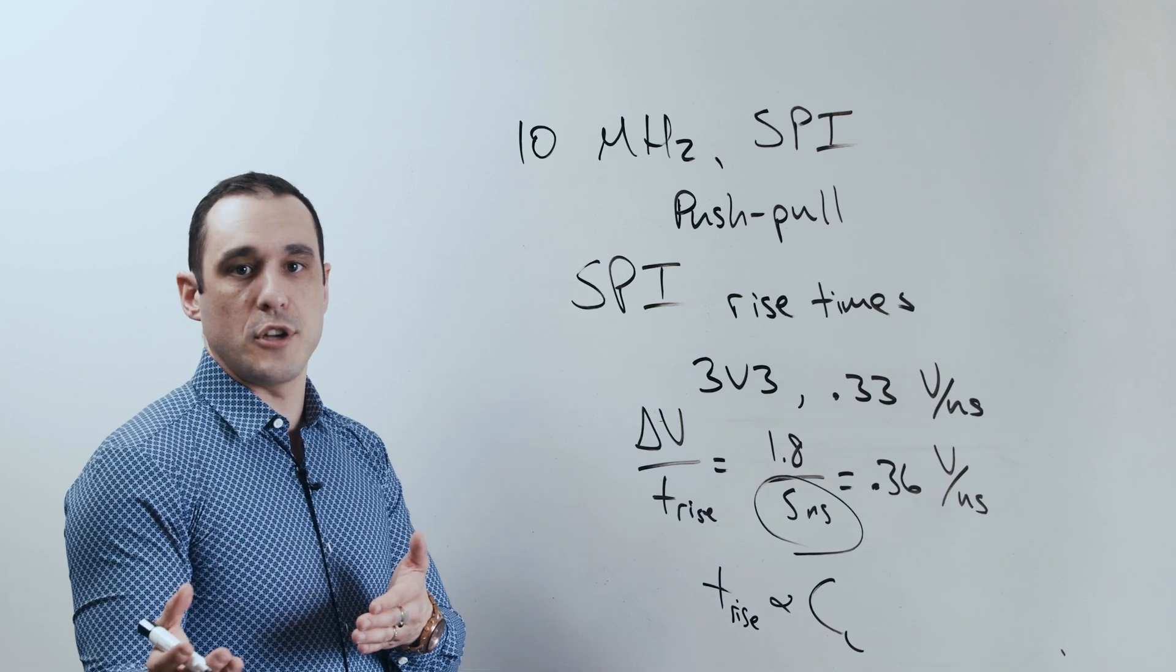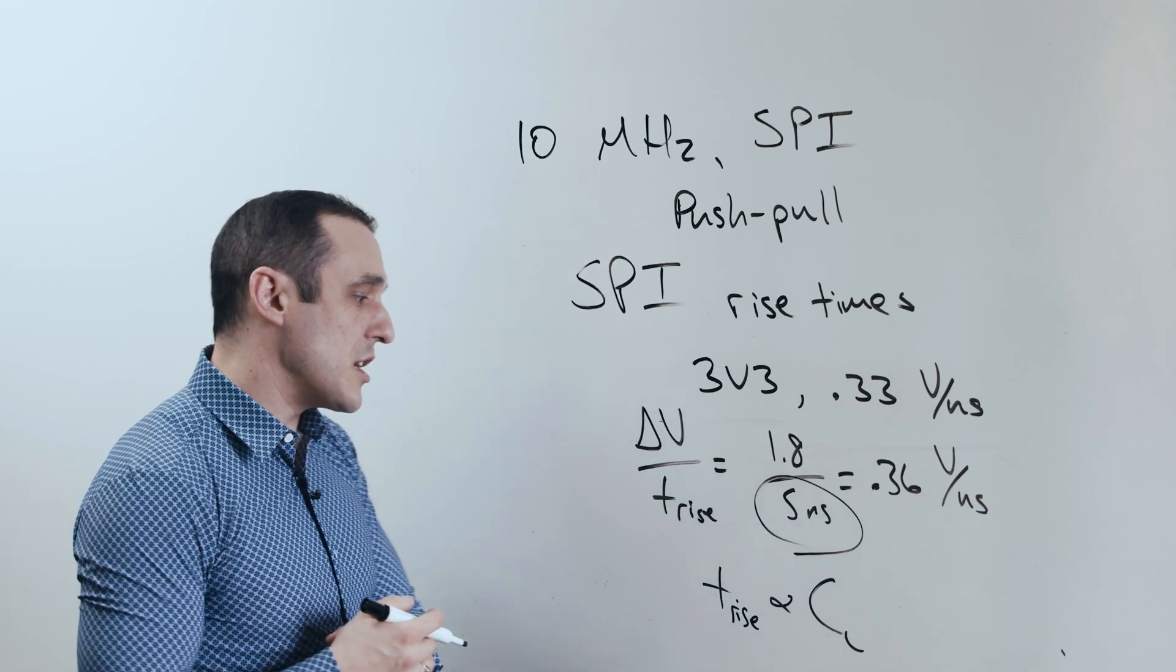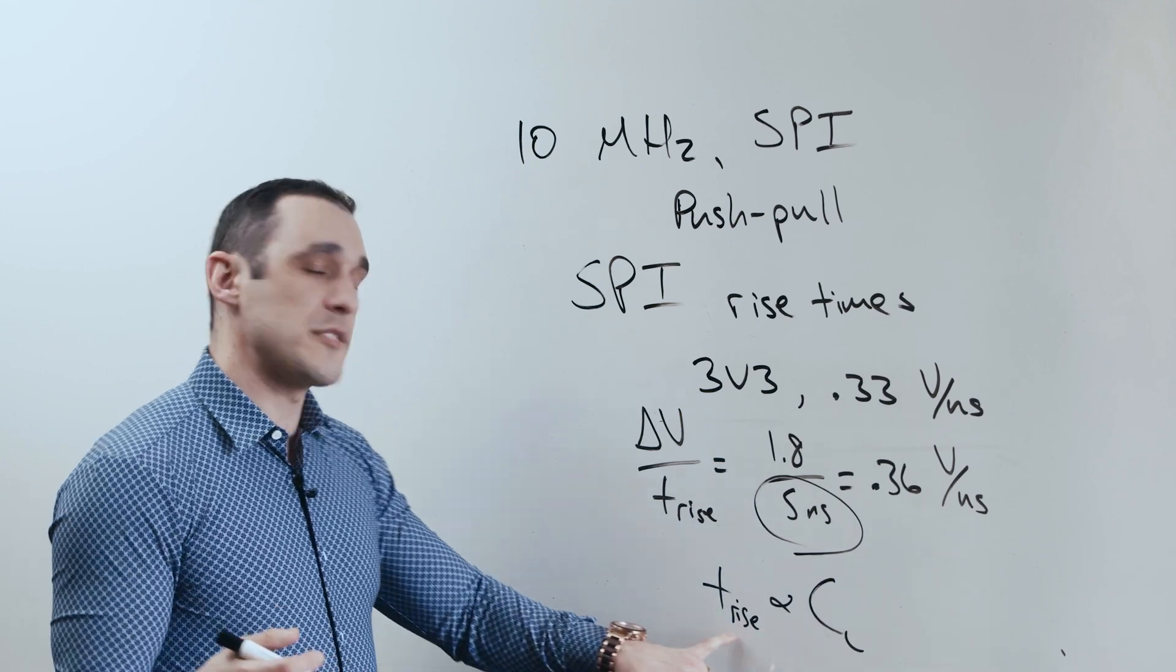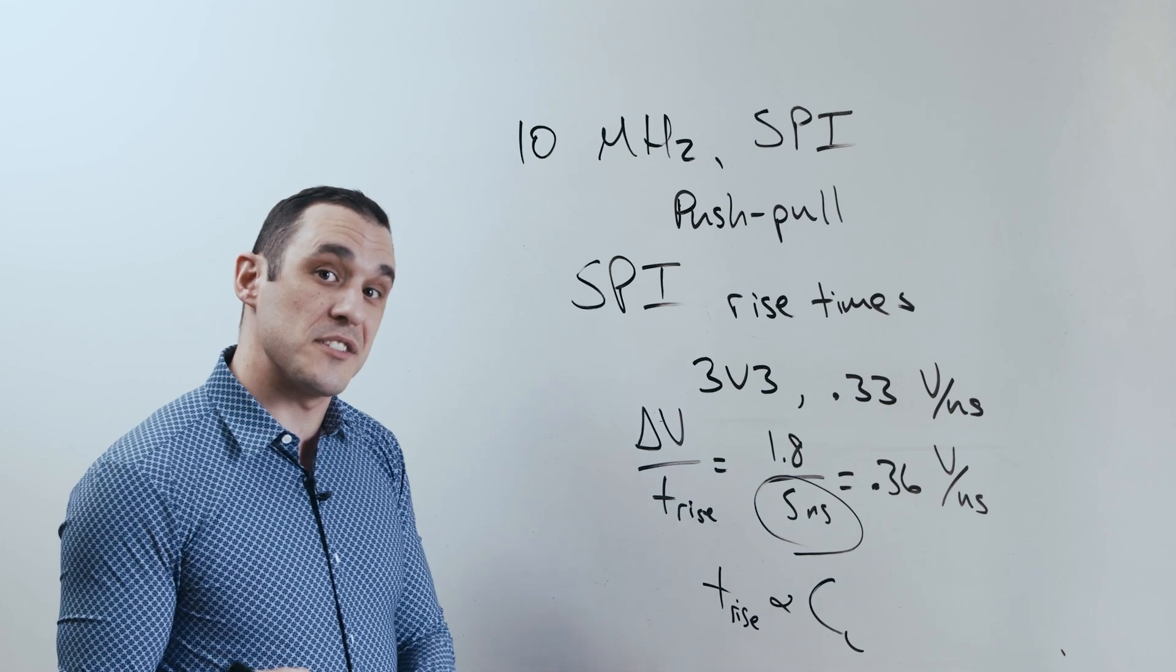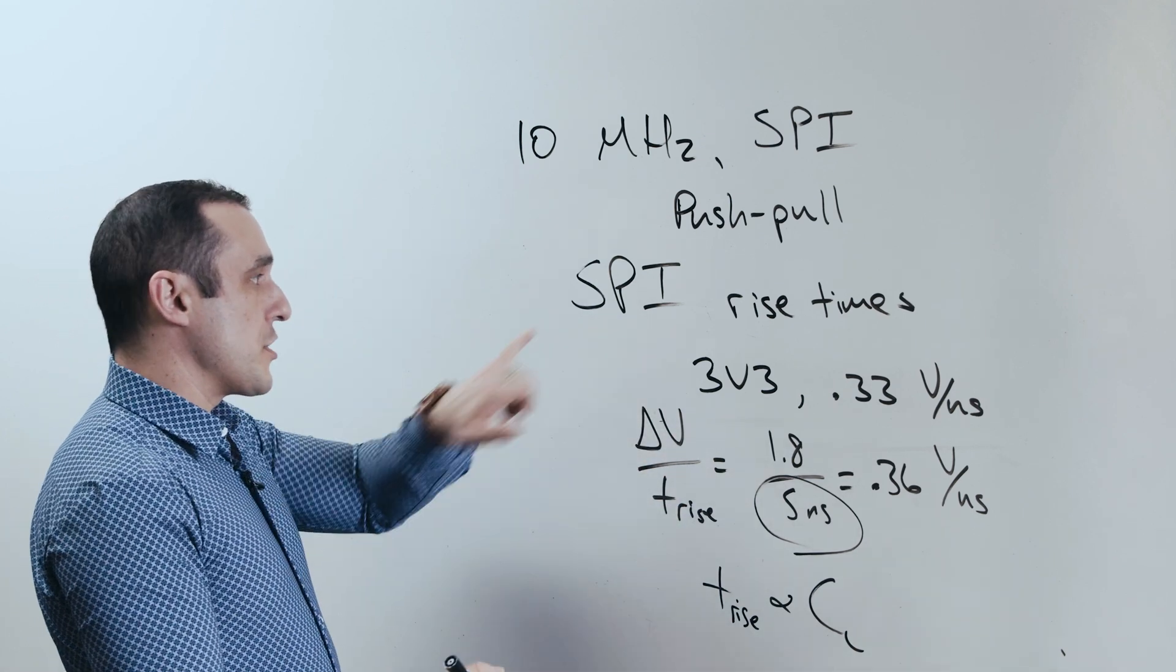So they will drive a specific load capacitance, they'll measure the rise time, and that's the rise time that they're going to quote you in that data sheet. And in general, if you were to double the load capacitance, then of course, you would expect a doubling of the rise time as seen at the pins on that receiving component.